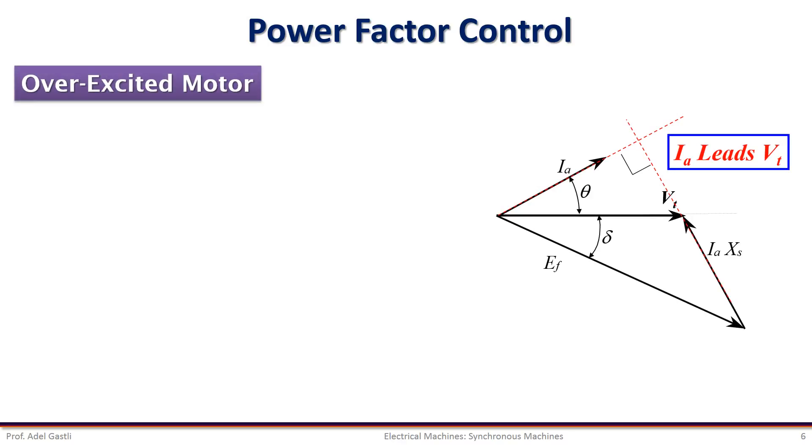Let's first consider the case of over-excited motor. If we increase and adjust the field current until EF cosine delta, which is the projection of EF on VT, becomes bigger than VT, then the machine is over-excited, and the power factor is leading like what is shown here in this phasor diagram, where the armature current is leading the terminal voltage.